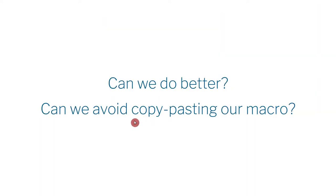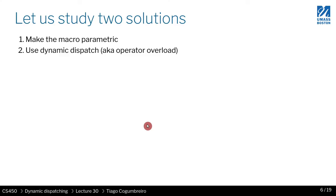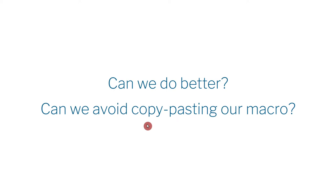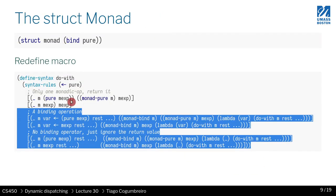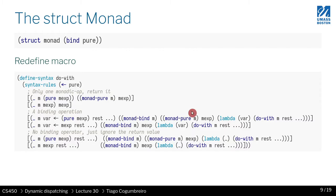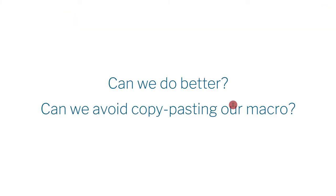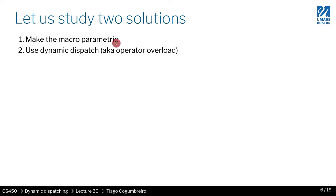But why would you want a generic bind? One very obvious reason is that we kept copy-pasting our macro. We had a simple macro and kept copy-pasting and changing just the binding operator — to the error or state operator. There are multiple ways of approaching this problem. The first thing we could do is make the macro itself parametric, generalizing the algorithm that is being duplicated, which kind of sidesteps the issue.